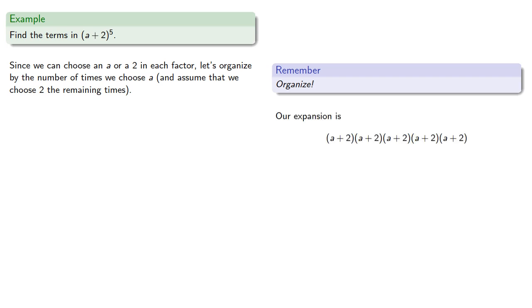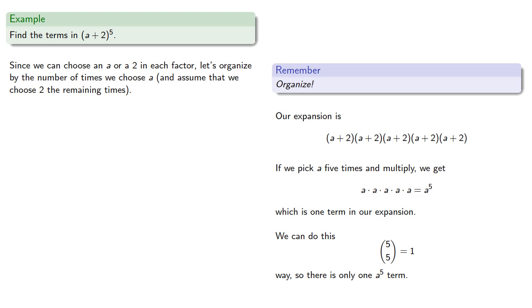Our expansion is: if we pick a five times and multiply, we get a⁵, which is one term in our expansion. We can do this in 5 choose 5, one way, so there's only one a⁵ term.